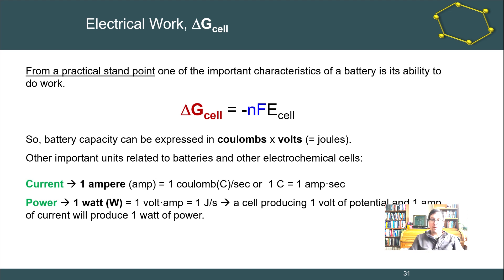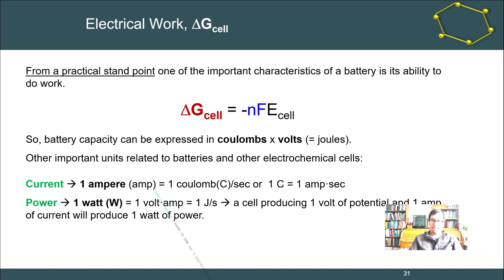Power consumption is typically expressed in kilowatt hours — this is how home power consumption is measured. There is an analogous concept of power supply. A kilowatt hour is one thousand watts delivered for one hour. We can interconvert these units for whatever practical application we need.